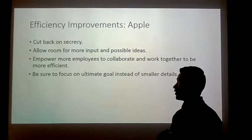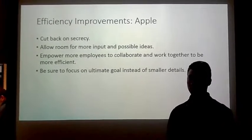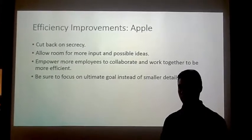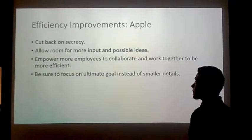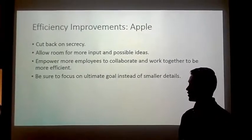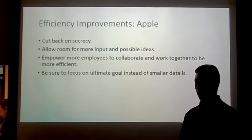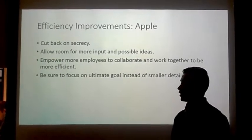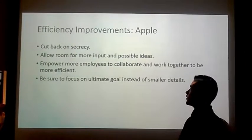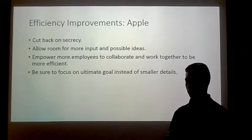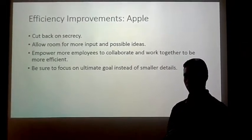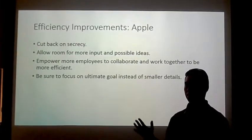For Apple, in order to be more efficient, we think it might be a good idea to cut back a bit on the secrecy, because when more people work together it can move the process along faster. Another recommendation is to empower employees to collaborate and work together to be more efficient, since working together they can get more done in shorter amounts of time. Additionally, Apple could focus on the ultimate goal instead of focusing too much on details, as over-focusing on details can sometimes impede progress and slow them down.